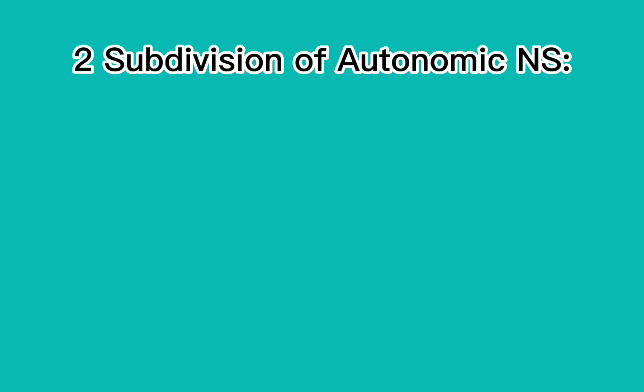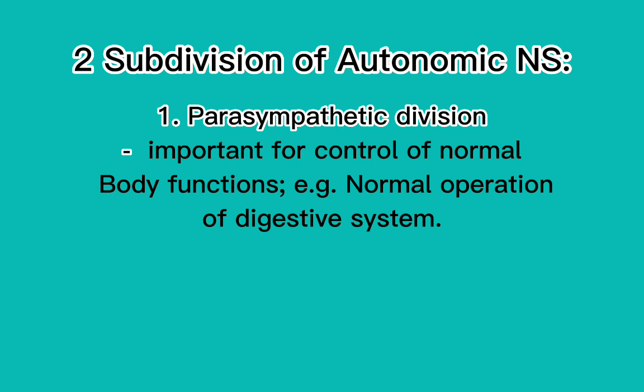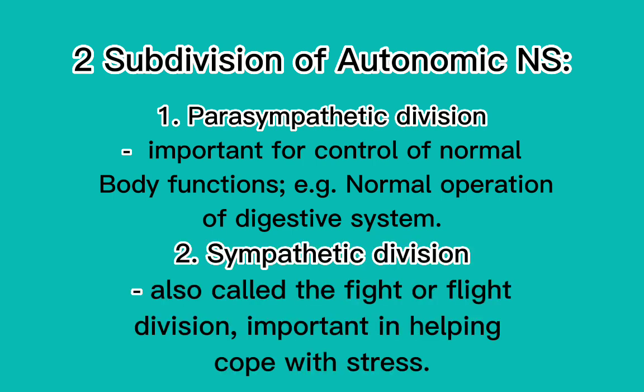Subdivision of the autonomic nervous system: 1. Parasympathetic division — important for control of normal body functions, e.g., normal operation of the digestive system. 2. Sympathetic division — also called the fight-or-flight division, important in helping cope with stress.